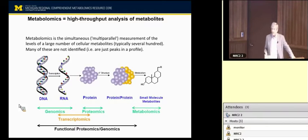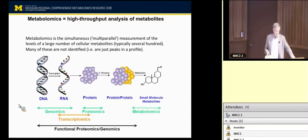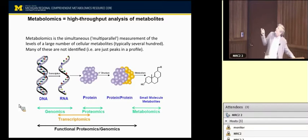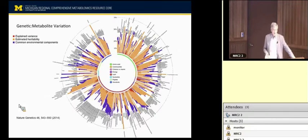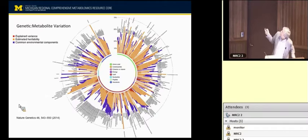Metabolomics is really a high-throughput analysis of metabolites. It's part of the continuum of DNA, RNA, protein, and protein-protein interactions. What the proteins do is generate different metabolites, and it's always said that the metabolome is really an echo of what's happening at the DNA level. There's a lot of data showing that variations within DNA can be very informative and have a large effect on metabolite levels in people's blood.